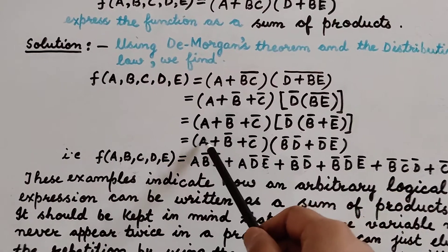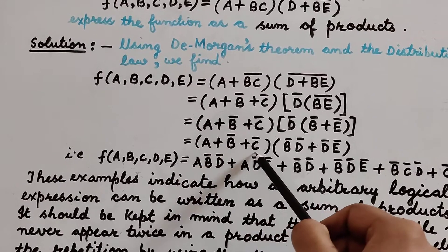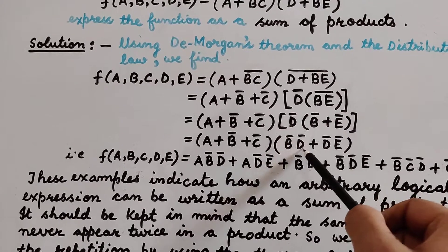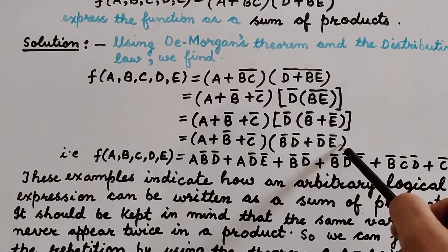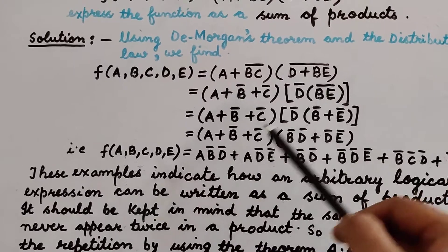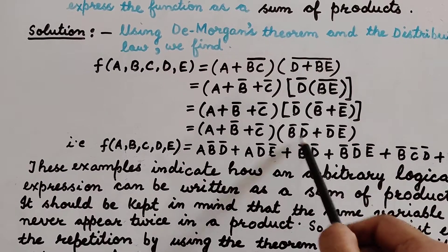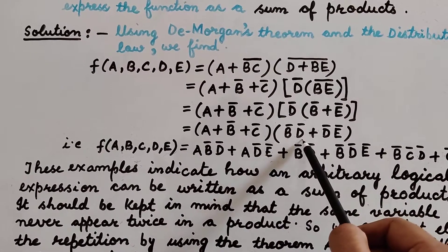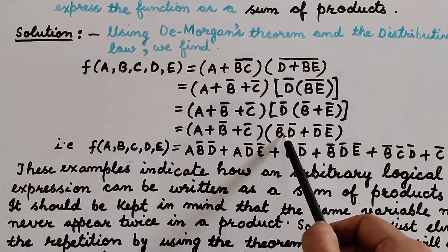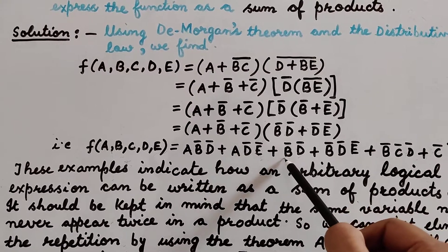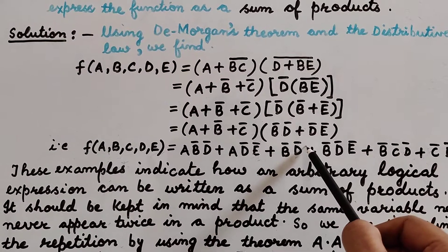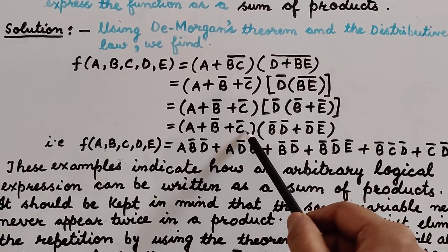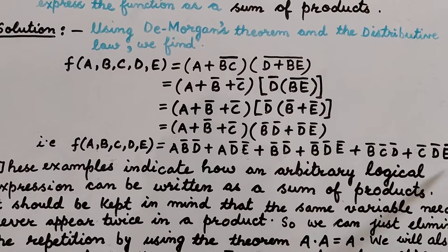Using the distributive law, we get the term A + B complement + C complement, then D complement. Simplifying further, it comes out to be B complement·D complement + D complement·E complement. Applying the distributive law again, this becomes A·B bar·D + A·D bar·E bar + B bar·B bar·D bar. Since B bar is repeated twice, one term cancels giving B complement·D complement. Then we get B complement·D complement·E complement + B complement·C complement·D complement + C complement·D complement·E complement.